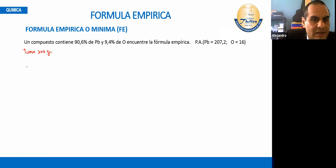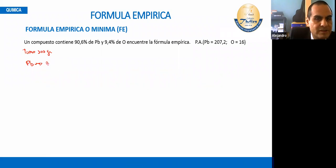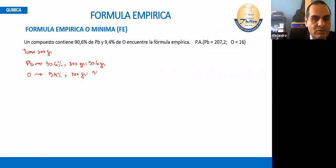Tomo 100 gramos de compuesto. El plomo: 90.6% × 100 g = 90.6 gramos. El oxígeno: 9.4% × 100 g = 9.4 gramos. Para determinar el número de átomos gramos de plomo: 90.6 g ÷ 200.2 g/mol (peso atómico del plomo). Para el oxígeno: 9.4 g ÷ 16 g/mol (peso atómico del oxígeno).